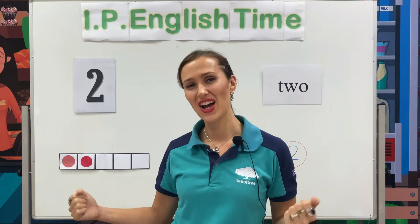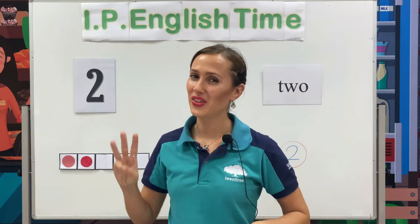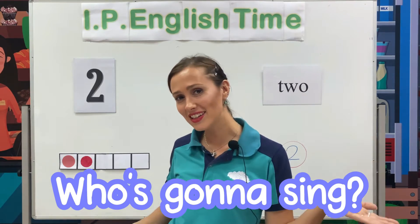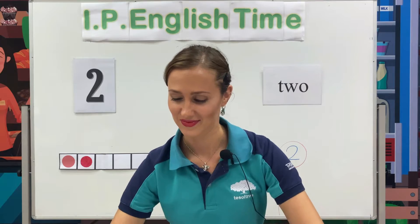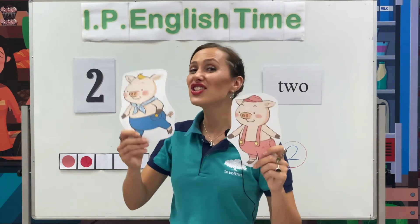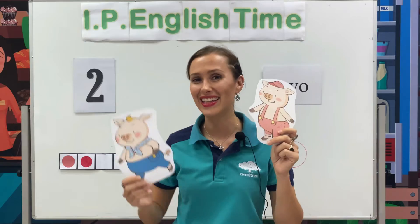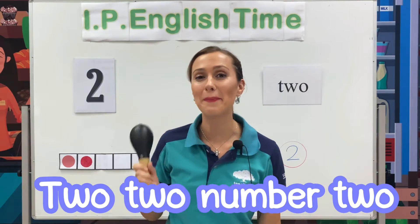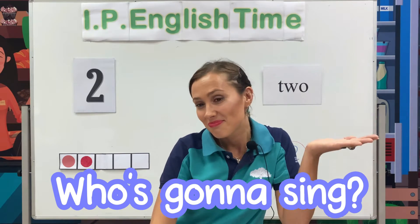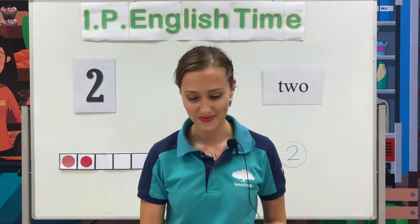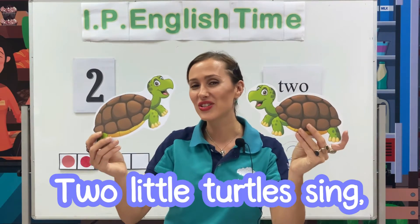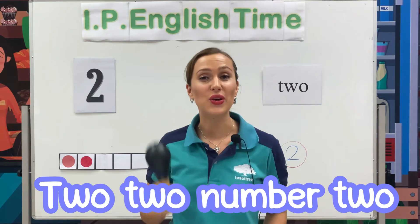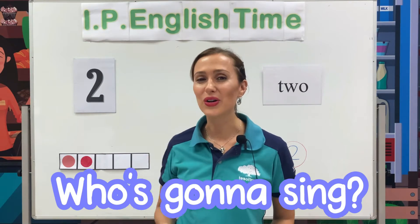Are you ready? 2, 2, number 2. Who's gonna sing? 2 little pigs sing la la la la la la. 2, 2, number 2. Who's gonna sing? 2 little turtles sing la la la la la. 2, 2, number 2. Who's gonna sing? 2 little rabbits sing la la la la la. Yay!